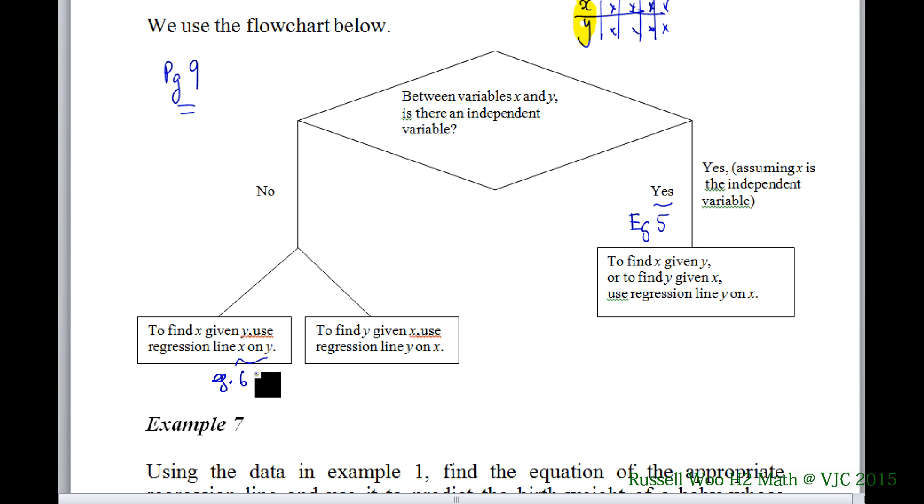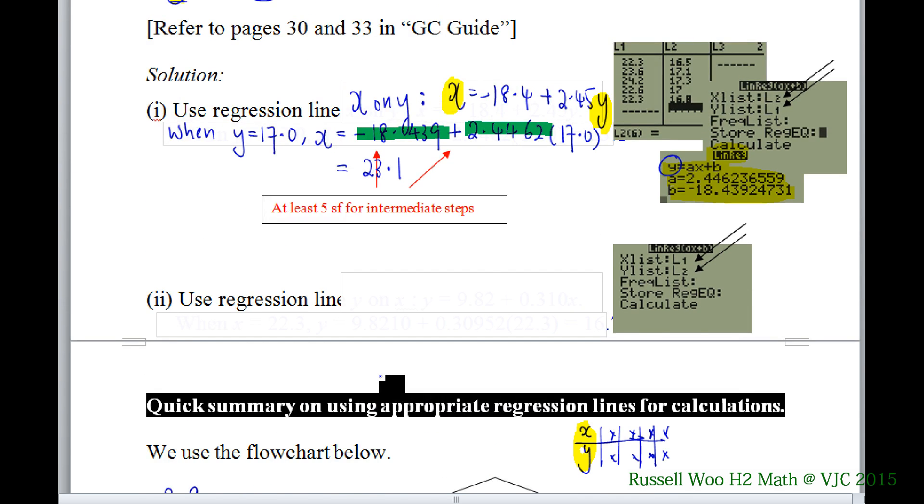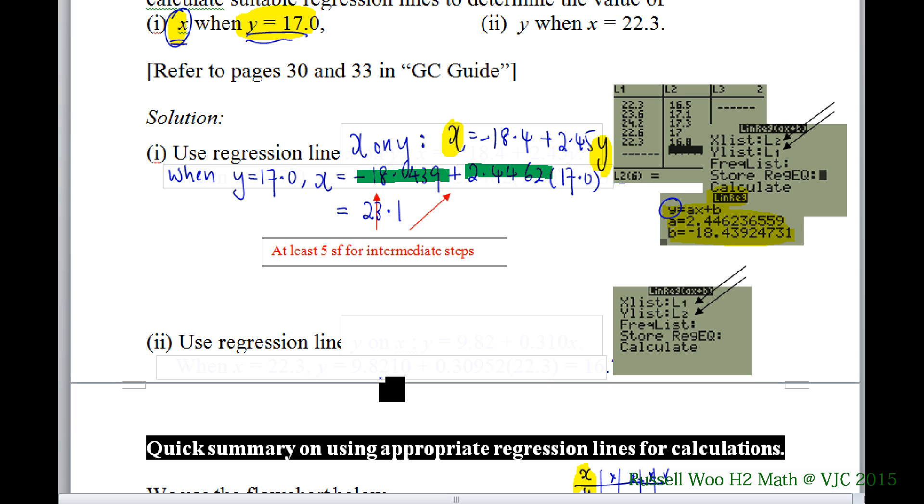Example 6 part 1. If you want to find Y given X, you will use another regression line. See example 6 part 2. So we are going to very quickly finish off example 6 part 2. Because now we want to find Y given X value. So this time you have to do a separate, do your regression line all over again.